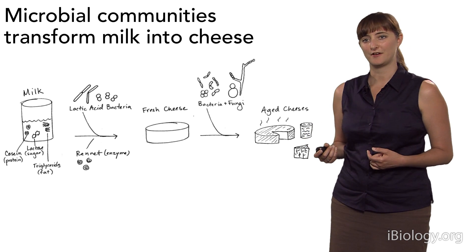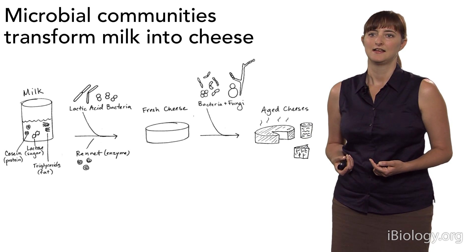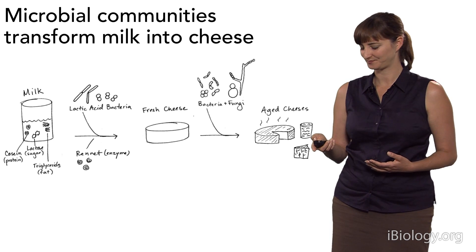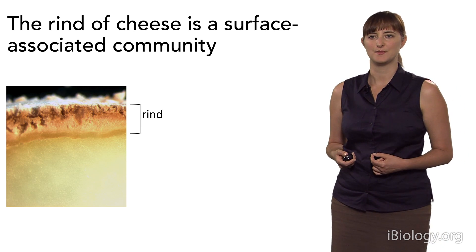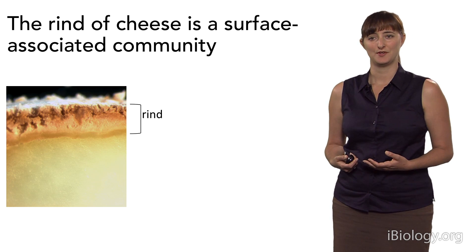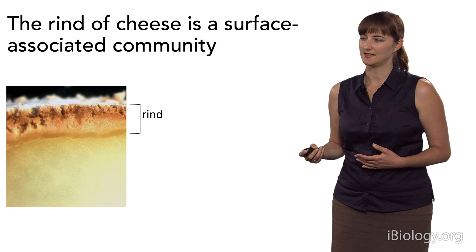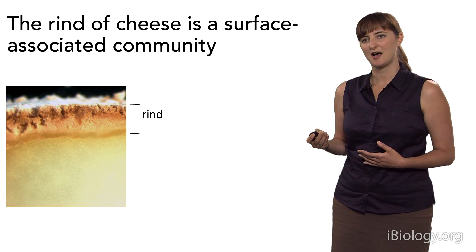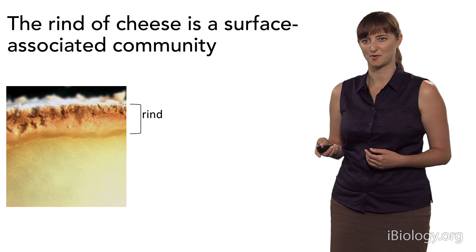The key factor in determining what type of aged cheese you end up with is the microbes colonizing the surface of the cheese. We have different bacteria and fungi, many coming in from the environment — not inoculated — yet they form these reproducible communities on the surface of the cheese. This rind forms during the aging process and is actually a surface-associated microbial community. Looking at a close-up cross-section of a slice of cheese, the top layer is this rind or biofilm that forms during aging.